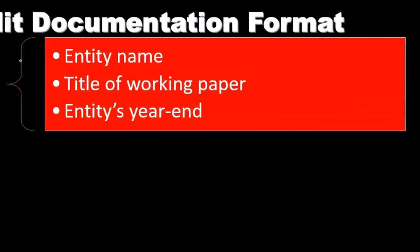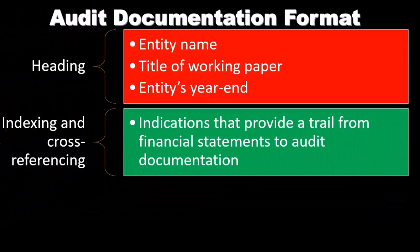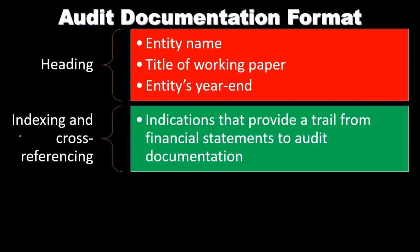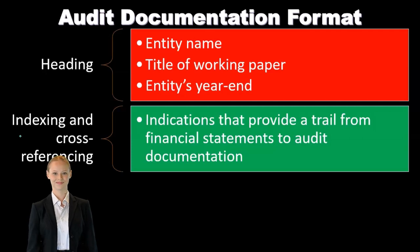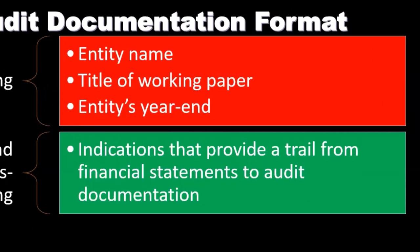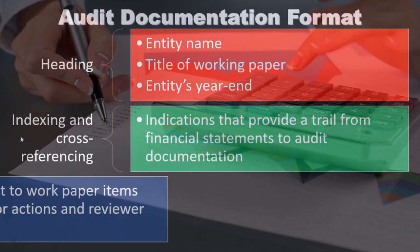The format often includes a heading with the entity name, the title of the working paper — which gives us an idea of what the working paper is trying to do or what evidence it's providing — and the entity's year end, so we know what year this working paper applies to. We also have indexing and cross-referencing, which provide a trail from the financial statements to the audit documentation. We use some type of indexing or references within our working paper, often tying line items on the trial balance or chart of accounts to the corresponding working paper.